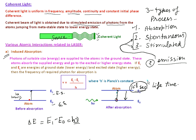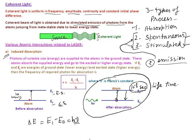So this was the case of absorption, and now there are two different processes: spontaneous emission and stimulated emission. One more thing to clarify here is that this explanation of absorption, whether you call it induced absorption or stimulated absorption, is only for one atom.